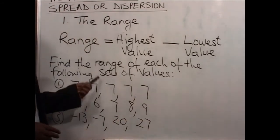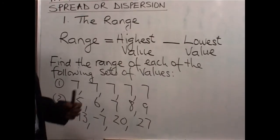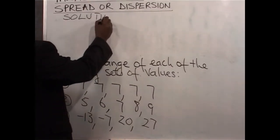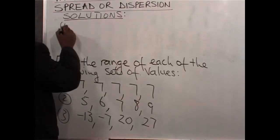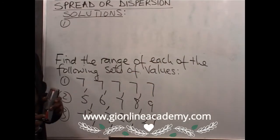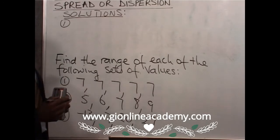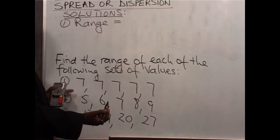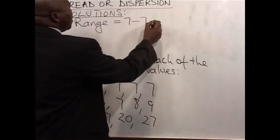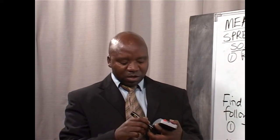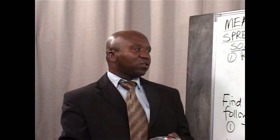For each of these three sets of values, we can find the range following the definition. The solution for the first set: the range is the difference between the highest value and the lowest value. When you look at the first set, all the values are the same — 7, 7, 7, 7, 7. So the range will be equal to 7 minus 7, and the range in this case is zero. This happens when you have a good number of pupils getting the same value — the range will be zero.